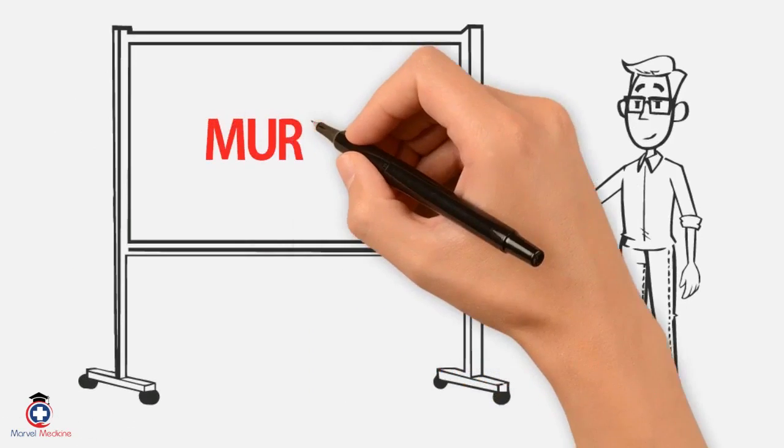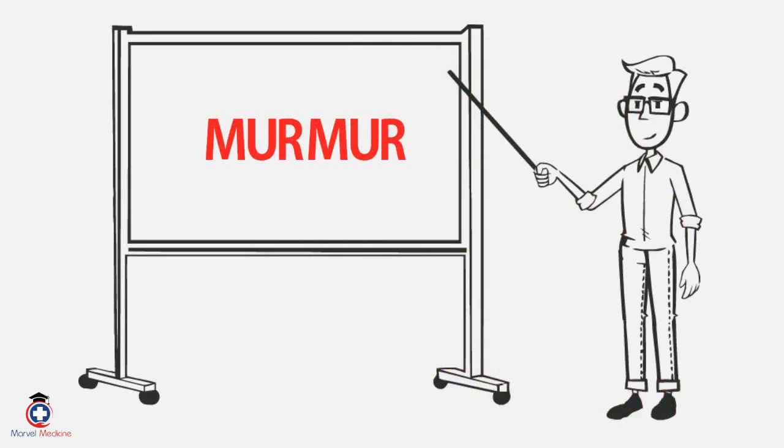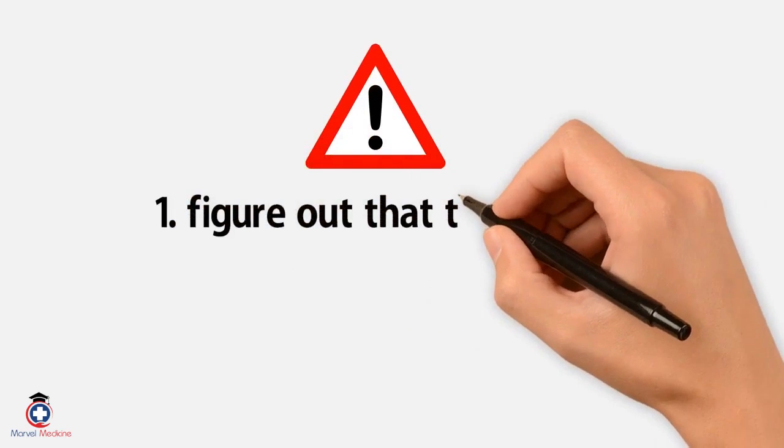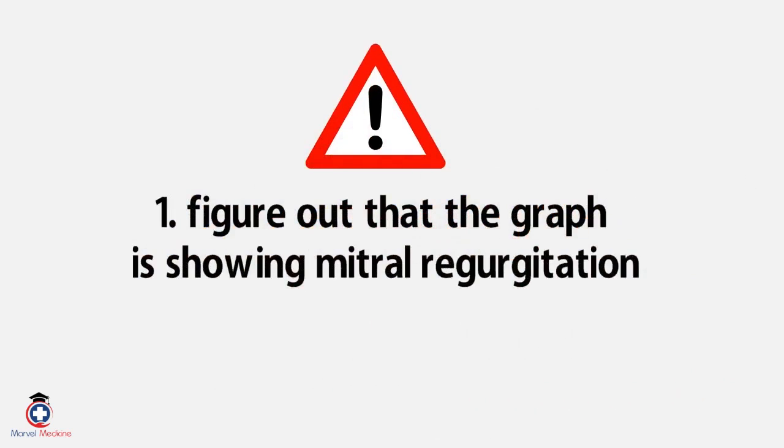Let's create some laterality. Let's say they show you this graph and told you that the patient had a murmur. What maneuver would worsen it? Well, first you have to figure out that this graph is showing me mitral regurgitation.